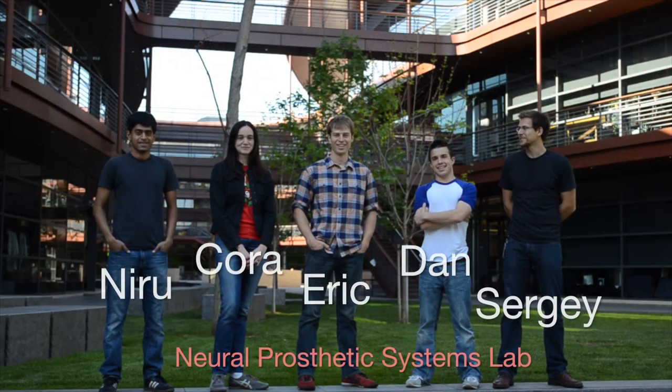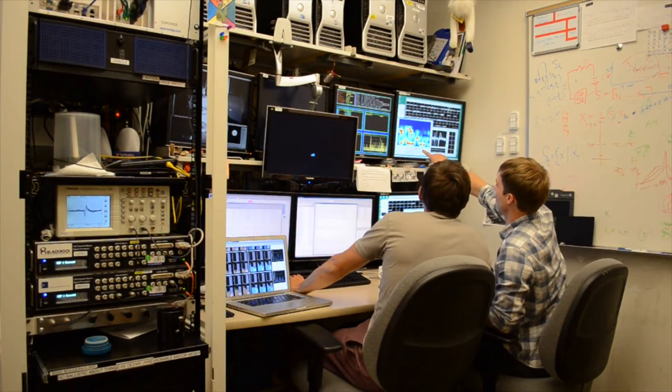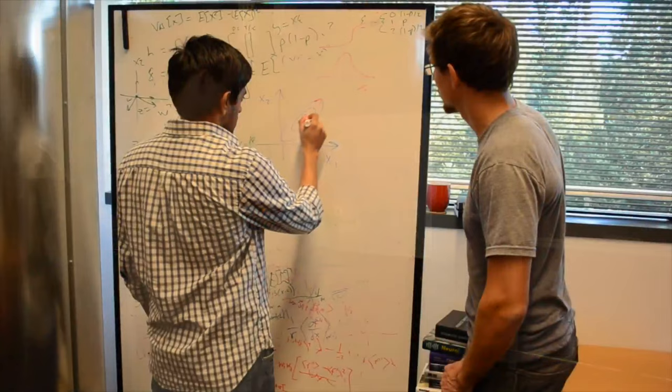We are PhD students in the Stanford Neurosciences program. Building better neural prosthetics requires a deeper understanding of the basic science of how the brain controls and coordinates muscles to produce complex movements. To study this, we record the activity of neurons in motor cortex of rhesus macaques doing an arm-reaching task.